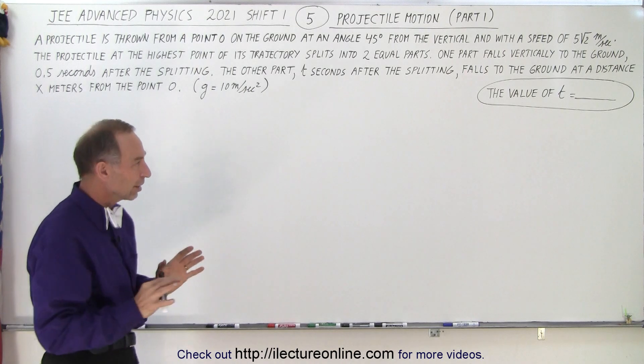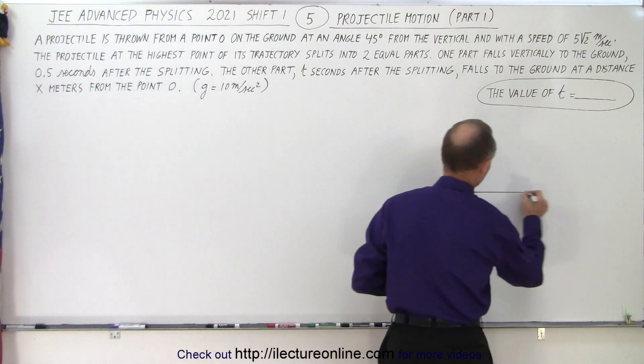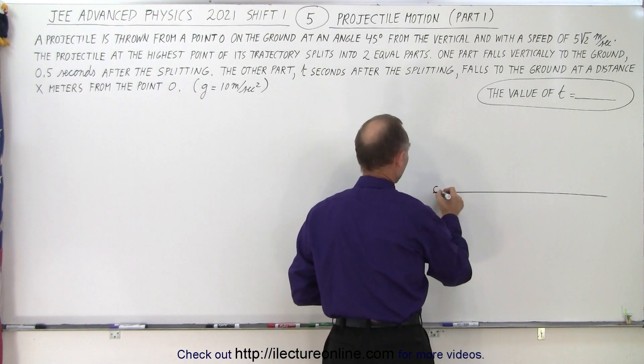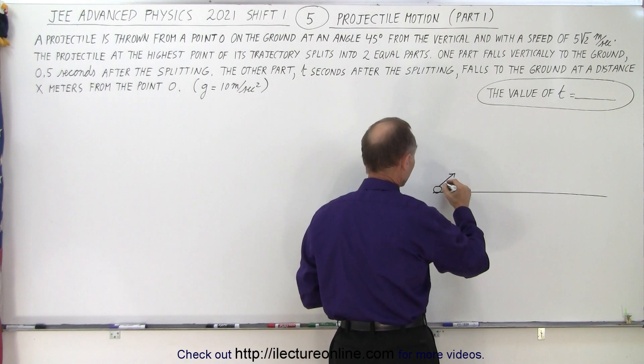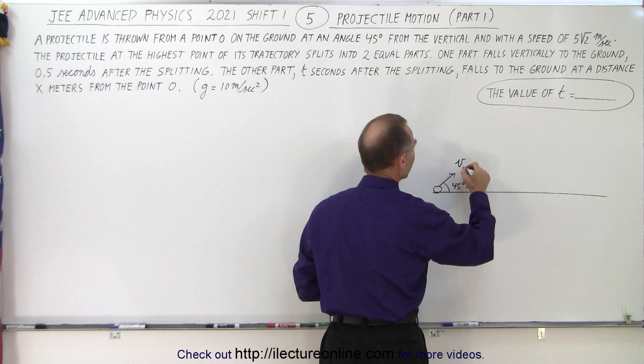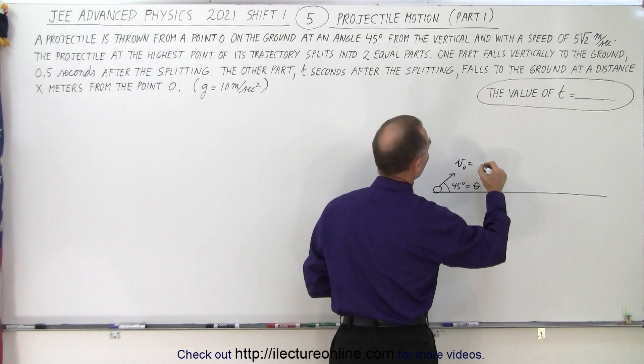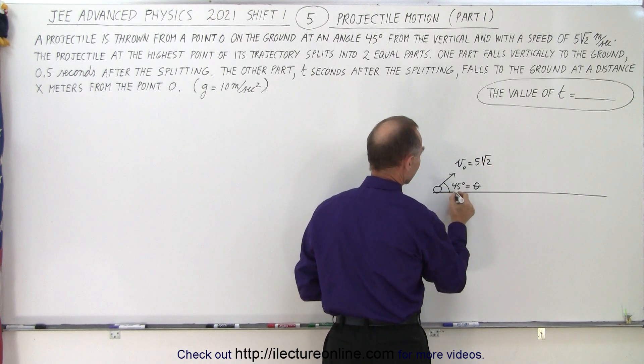Now let's draw a little schematic of what's going on. So we have the ground. We have a projectile that's being sent off at an angle of 45 degrees from the vertical, which means 45 degrees from the horizontal. Same thing. So 45 degrees. Let's call that angle theta. The initial velocity is equal to 5 times the square root of 2. So when we calculate the initial velocity in the x direction,